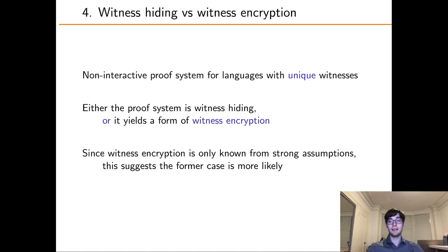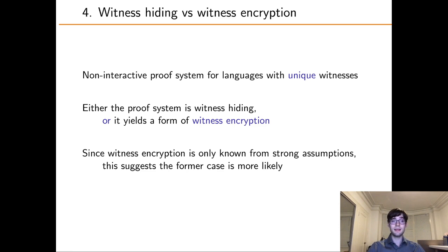Our last result is in a slightly different vein. It limits to the case of languages with unique witnesses, which is still an interesting setting for witness hiding, though we would like it to be more general. We construct a proof system that is either witness hiding or yields a form of witness encryption. If we assume witness encryption does not exist, then our scheme is certainly witness hiding. More realistically, we should interpret this either-or result as heuristic evidence that our scheme is secure.